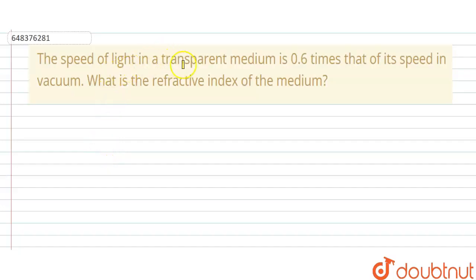Here in the question, it is given that the speed of light in a medium is 0.6 times the speed of light in vacuum. Now what is the refractive index of the medium? So we need to find out the refractive index of the medium. It is given that